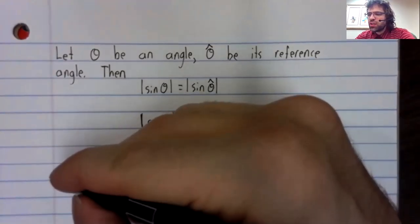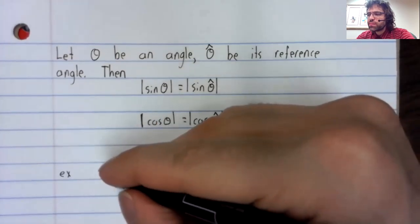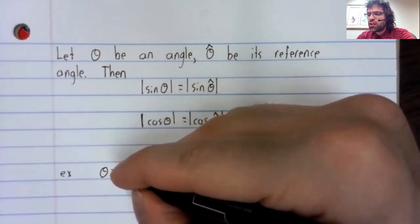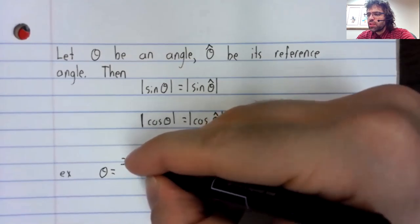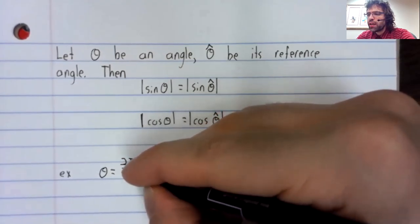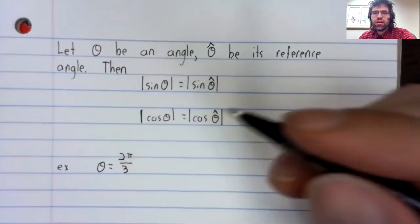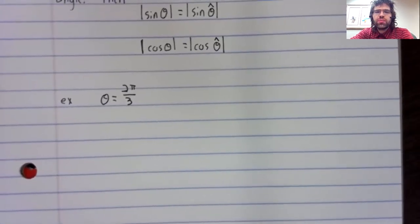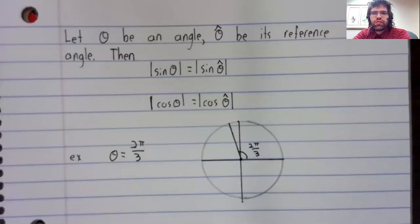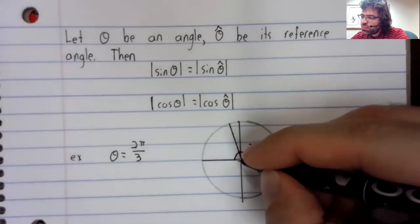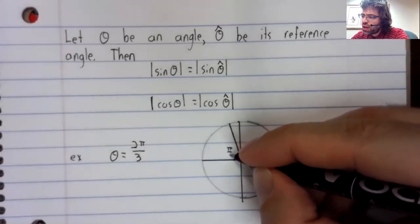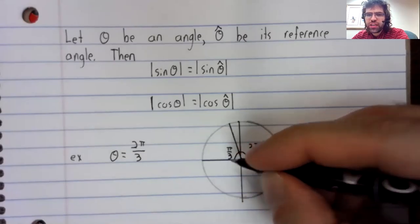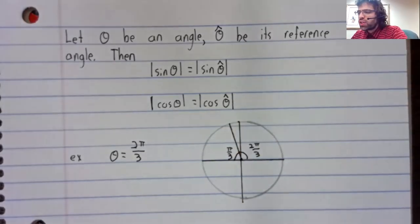Let's investigate this. Let's look at theta equals two pi divided by three. This puts us in the second quadrant, and the reference angle is this, which is pi divided by three. How do I know that?